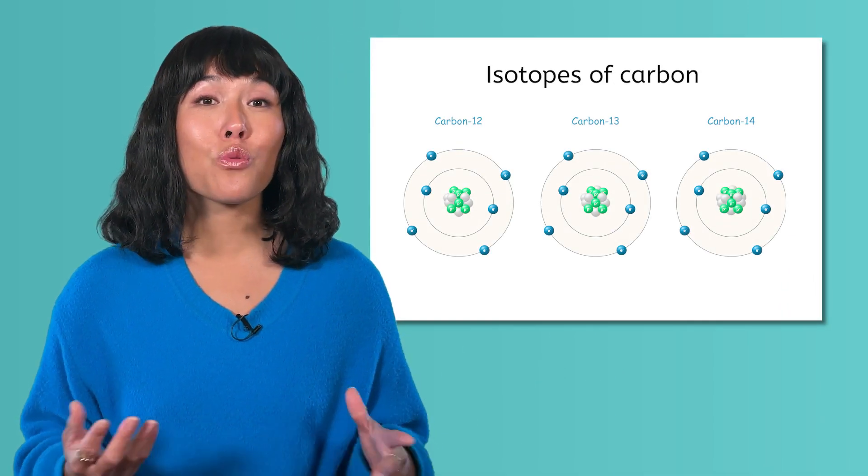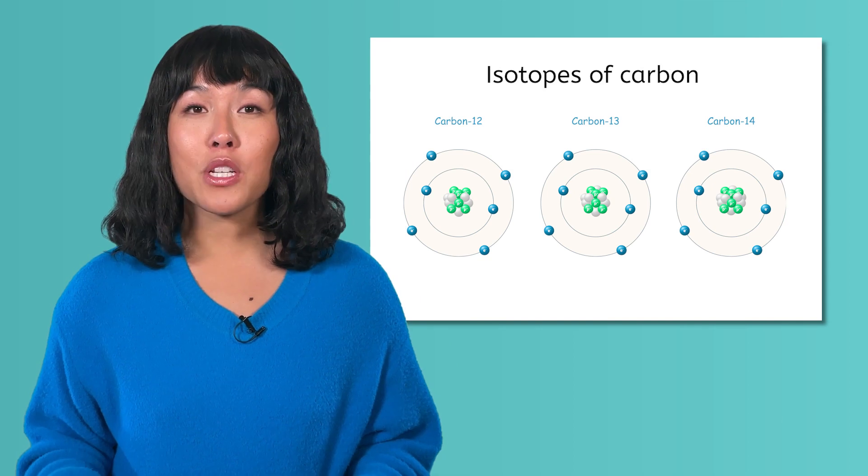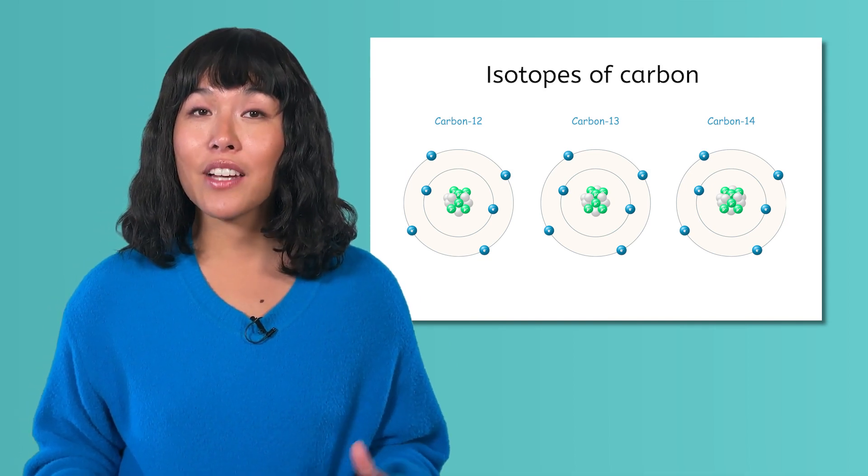Sometimes when discussing an element, it is important to be specific about which isotope you are talking about. This is because most elements have two or three different naturally occurring isotopes. Carbon, for example, has three isotopes: carbon 12, carbon 13, and carbon 14.